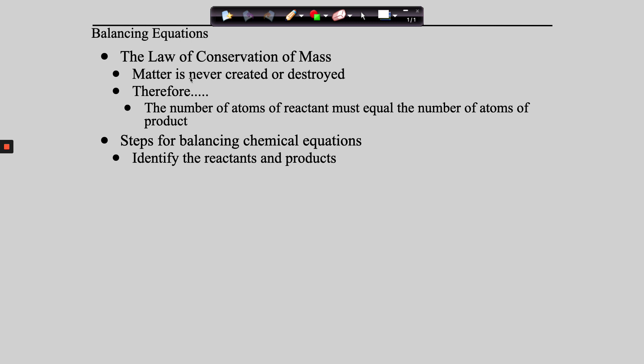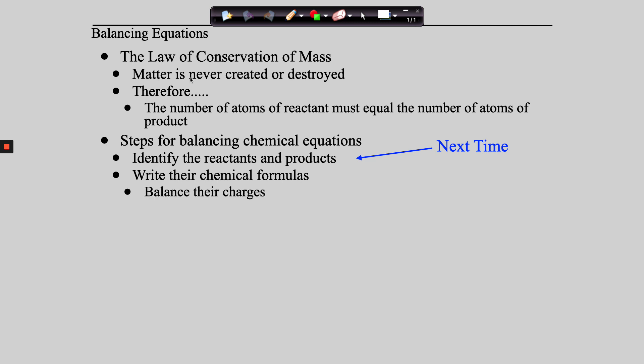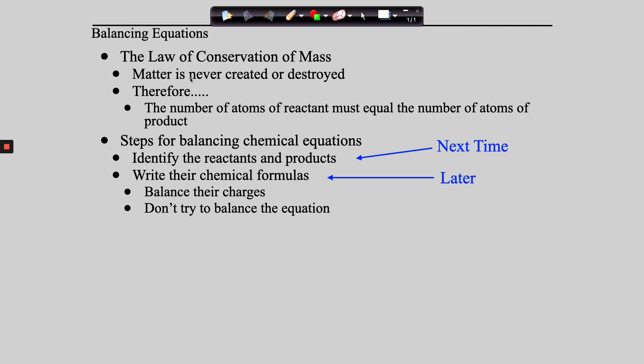The steps for balancing chemical equations are these: first, identify the reactants and products — we're not going to do that until Friday; I'll do it for you today. Step two, write the chemical formulas for the reactants and products — that was two units ago, remember the one-page test where you wrote formulas? When we do that, you balance them by charges, but you don't balance the equation — that's the last thing we're going to do. Today, what we're going to do first is balance equations using coefficients.